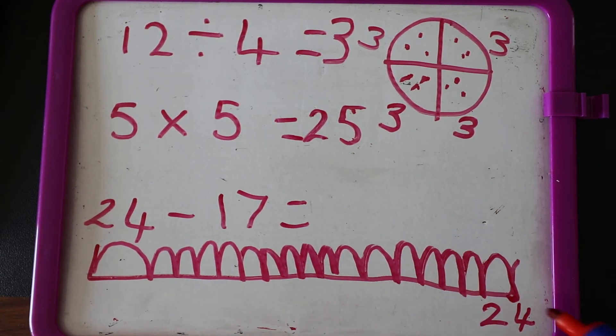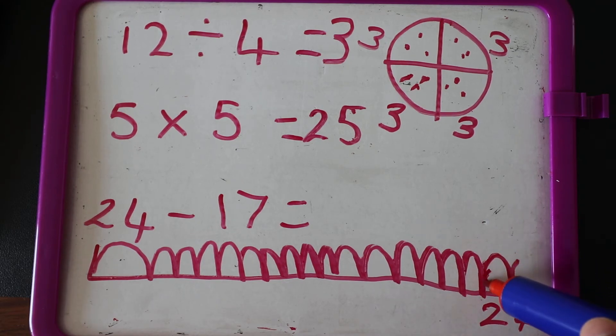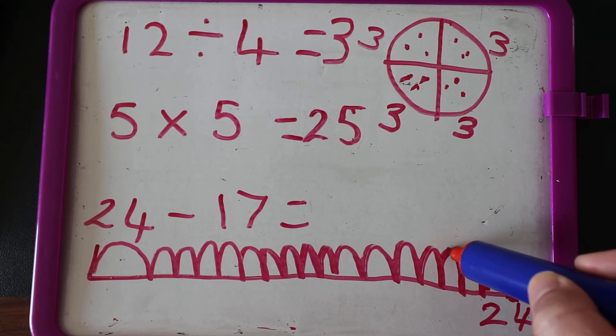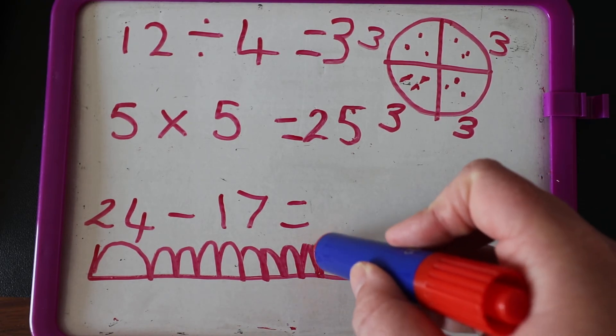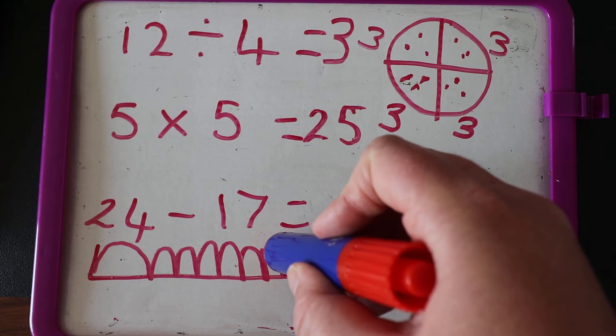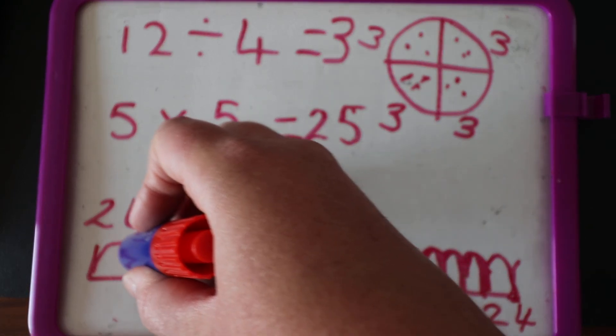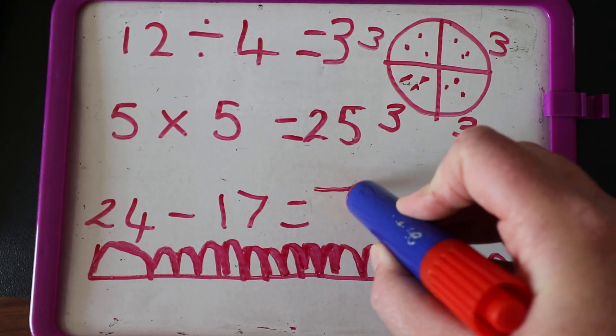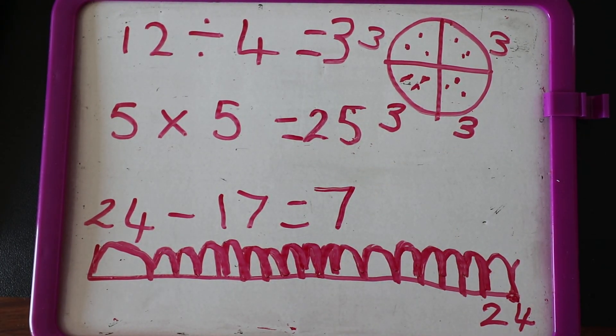Ready, 24, counting backwards: twenty-three, twenty-two, twenty-one, twenty, nineteen, eighteen, seventeen, sixteen, fifteen, fourteen, thirteen, twelve, eleven, ten, nine, eight, seven. Should have got seven. Well done if you got that right. Head on over to our main lesson.